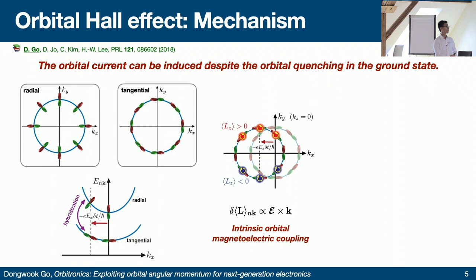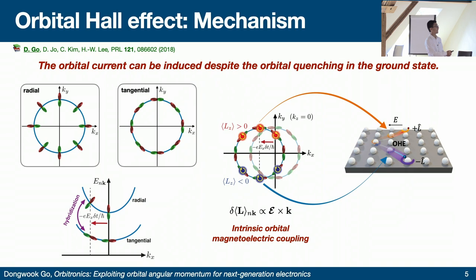We found an intrinsic mechanism for magneto-electric coupling mediated by orbital characters. For high-symmetry materials, this induced orbital angular momentum is generated along the direction of E cross k. Because this induced momentum depends on k through an odd function, it leads to orbital-dependent motion: states with positive ky carry positive angular momentum and move in the plus-y direction, while the opposite holds for states with negative ky. This results in an effect called the orbital Hall effect.